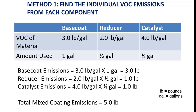In this example, the base coat VOC is 3 pounds per gallon, the reducer VOC is 2 pounds per gallon, and the catalyst VOC is 4 pounds per gallon. If we used one gallon of base coat, a half gallon of reducer, and a quarter gallon of catalyst, the total emissions from this coating would be 5 pounds of VOC.